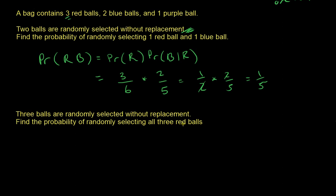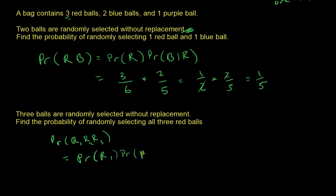What's the probability of selecting three red balls? We extend the multiplication rule to three draws. First red ball: 3 out of 6. Second red ball given the first was selected: 2 red balls remain out of 5. Third red ball given the first two were selected: 1 red ball remains out of 4 balls. You can multiply across to simplify — I'll leave that to you.